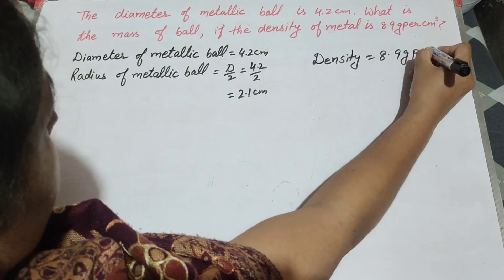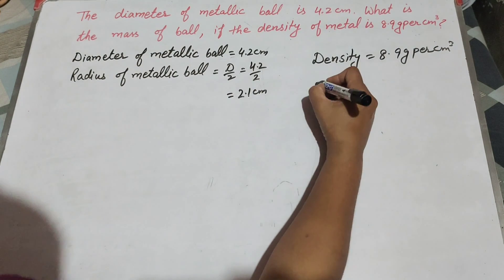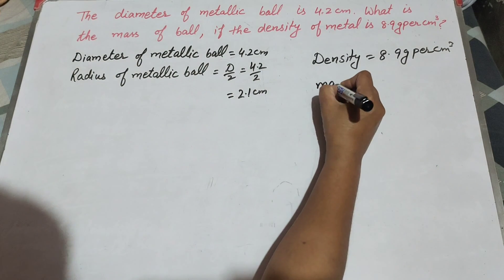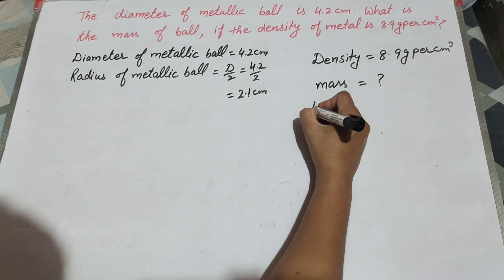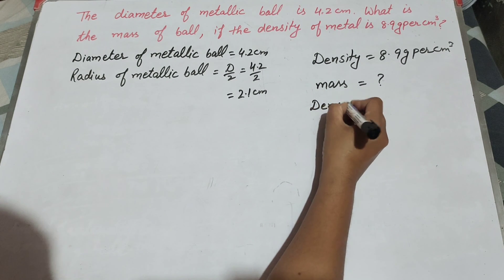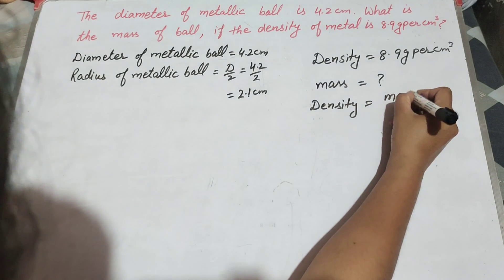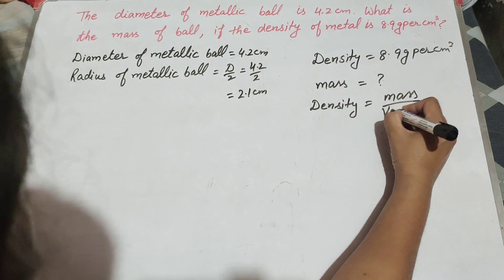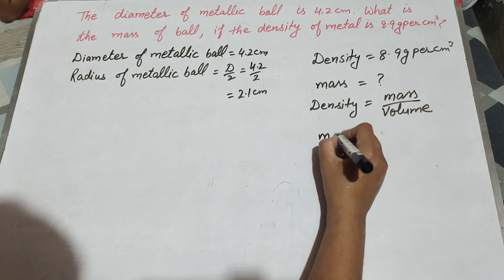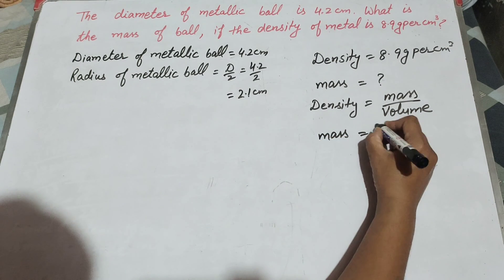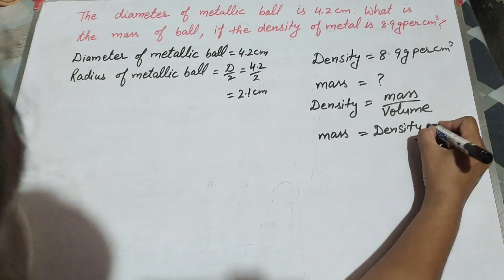We need to find the mass of the ball. We know that density is equal to mass over volume, so mass is equal to density multiplied by volume.